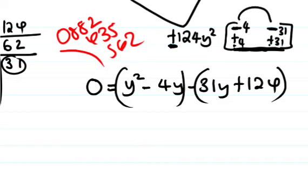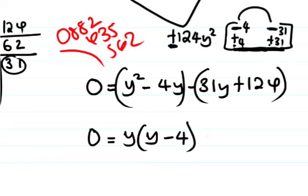After pairing the terms, we should find the common factor in each bracket. Common factor in the first bracket is y. We take y out: y times y minus 4. In the second bracket, 31y over 31y is y. So we have y minus 4 in both brackets.